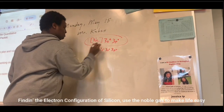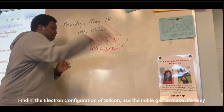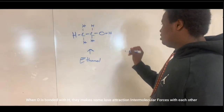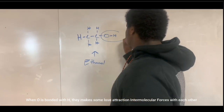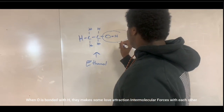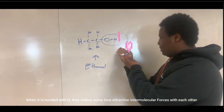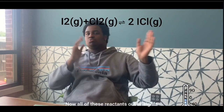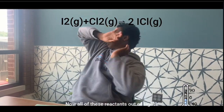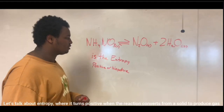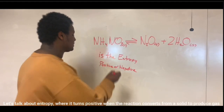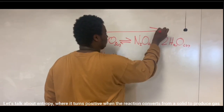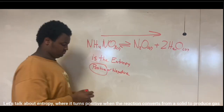Finding the electron configuration of silicon used a noble gas to make life easy. When O is bonded with H, they make some lovely intermolecular forces with each other. All these reactions be shifting to the right, now all these reactants out of sight. Now hey, let's talk about entropy, where it turns positive when the reaction converts from a solid to produce gas.